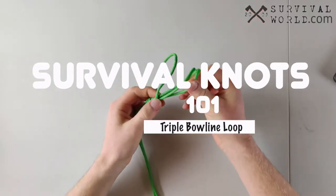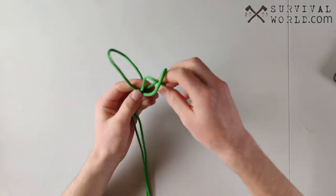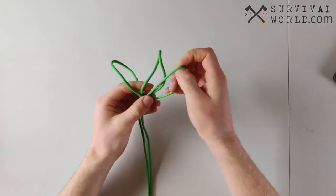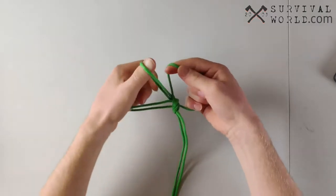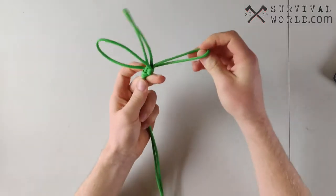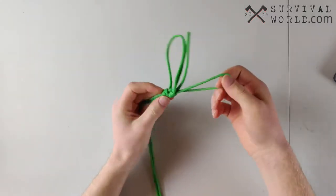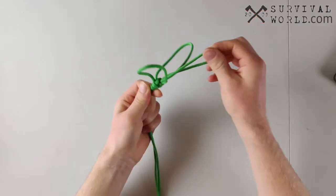Now the triple bowline loop is just another variation of a bowline, very similar to the double bowline loop. The main purpose of this knot is to have multiple places to actually hitch onto one rope really easily, or multiple places to anchor this knot to.